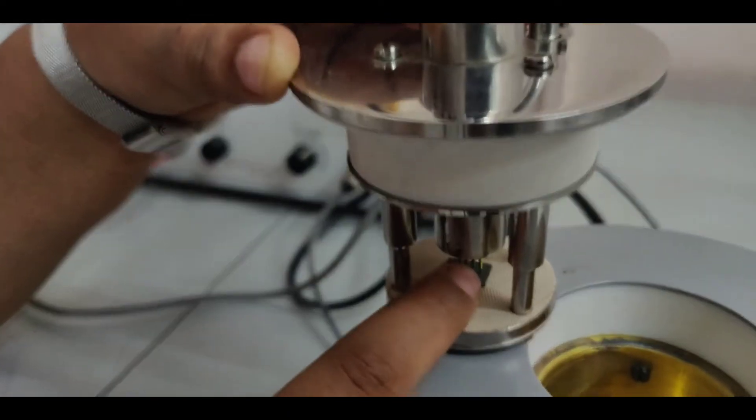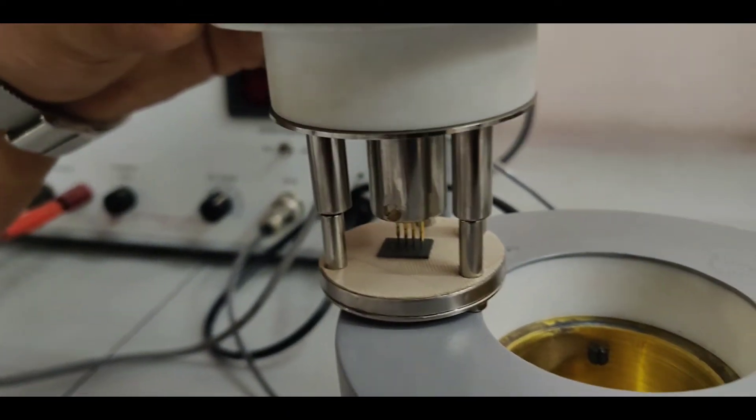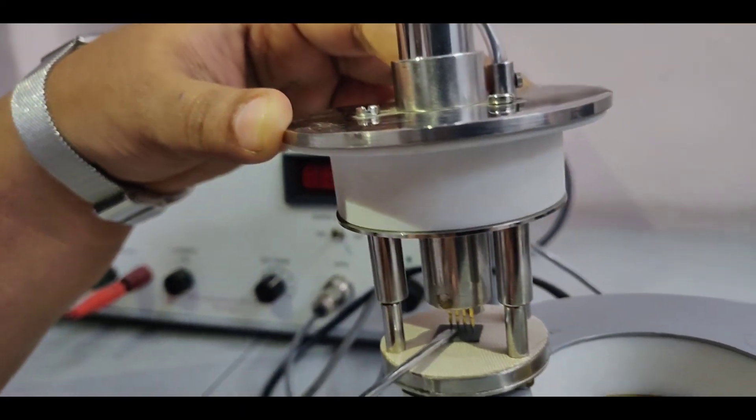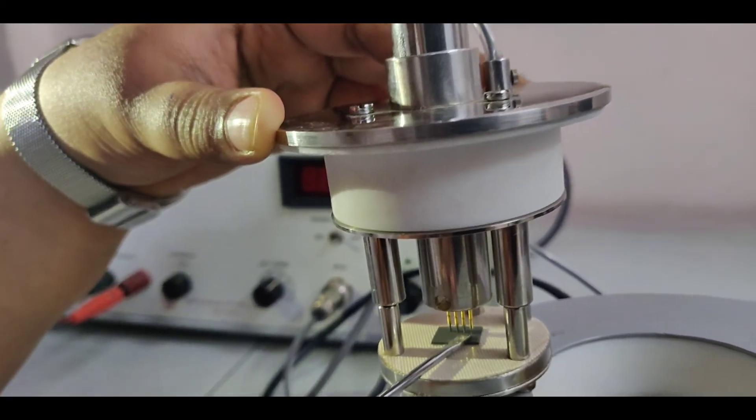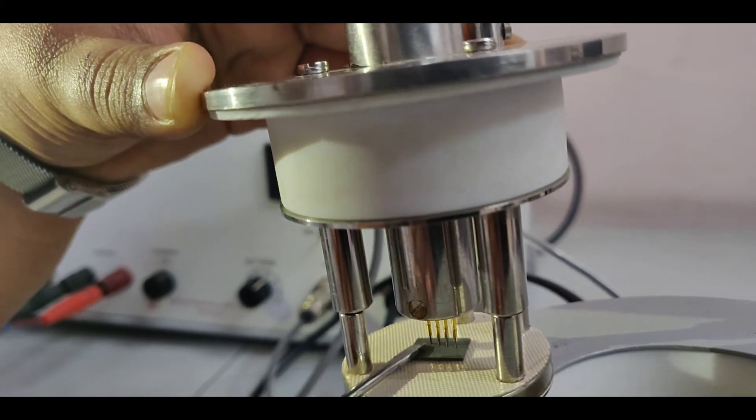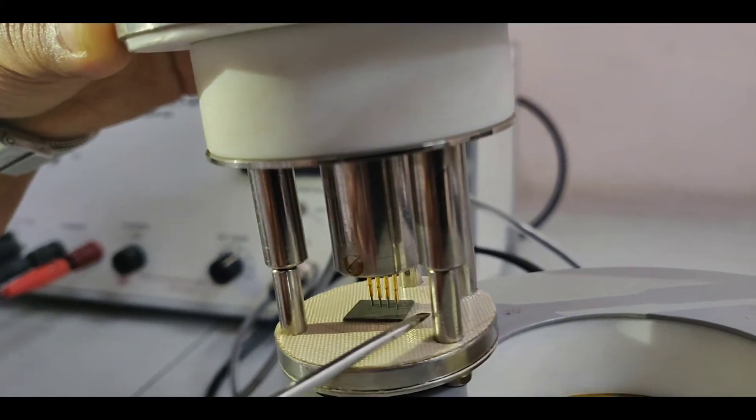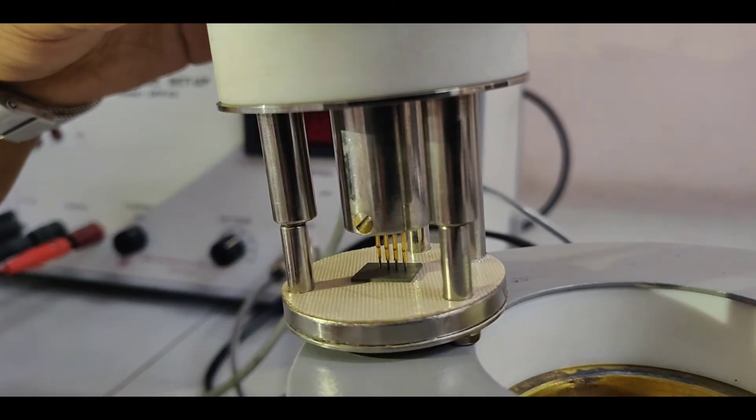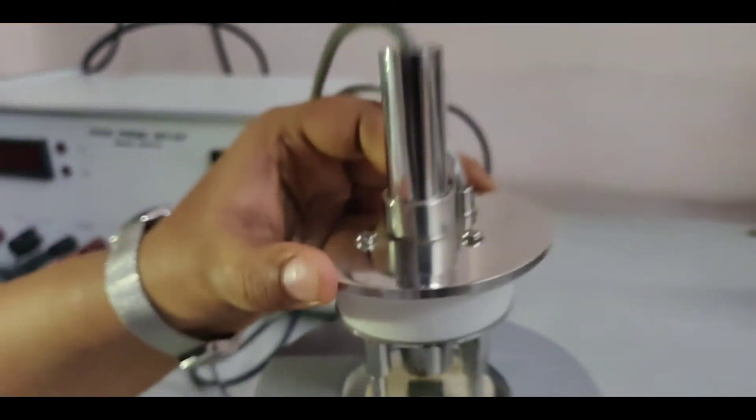Now here is the sample and these are the 4 probes which are equally spaced. If you can see, this is probe 1, 2, 3, and 4. You can see how small is their diameter and what is the space between. I have kept the 4 probes in a linear manner on the sample. So we will just put this sample in the oven.